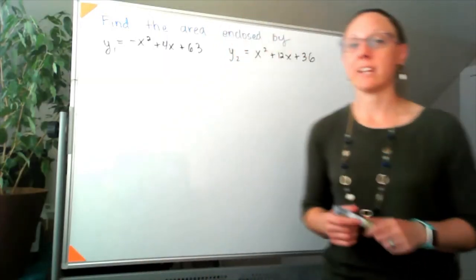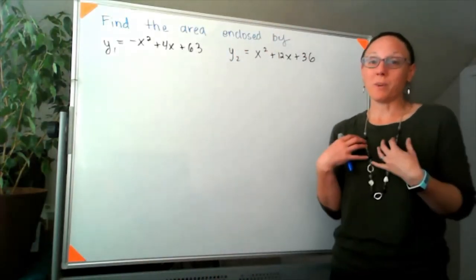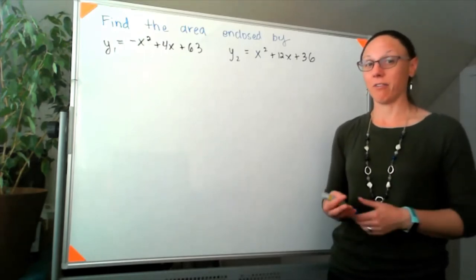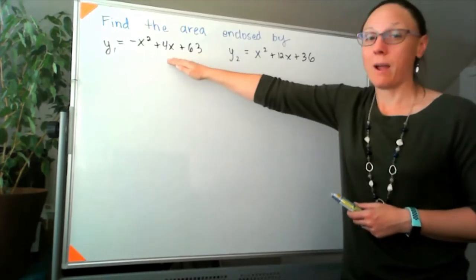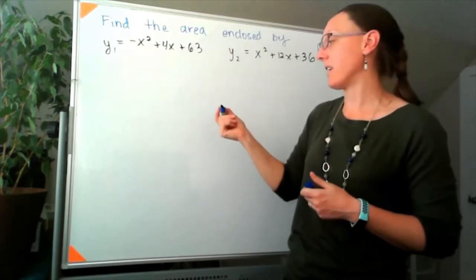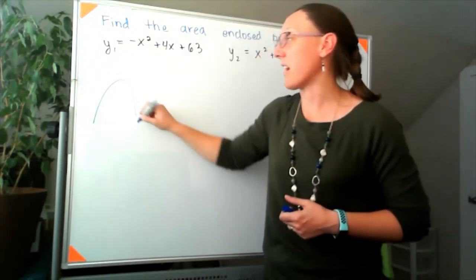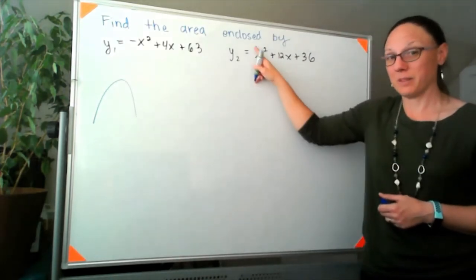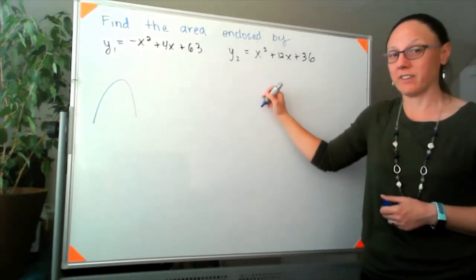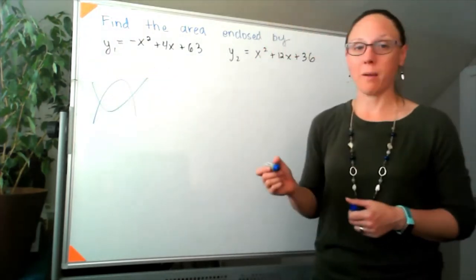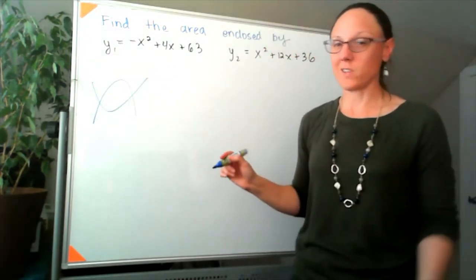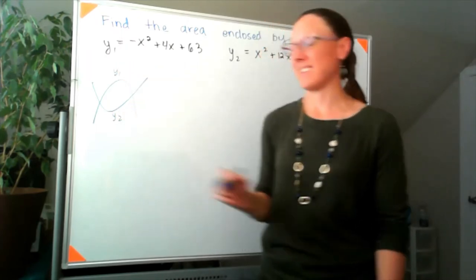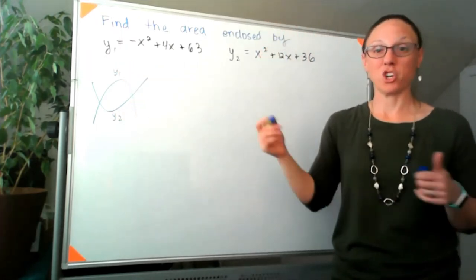We will need the intersection points for this next problem. For me this is a classic case where I'm at least going to think about a fake graph. That's a parabola, and the minus sign in front of the x² tells me it opens downward. This is also a parabola, but the positive coefficient on x² tells me it opens upward. So no matter what else is going on, y₁ has to be on the top and y₂ has to be on the bottom, just by the shape of their graphs.